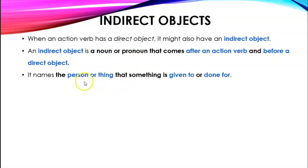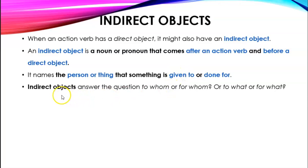It names the person or thing that something is given to or done for. If you're doing an action, who's it being done for? If you're doing something, who's it being given to? Indirect objects answer the question to whom or for whom, or to what or for what?